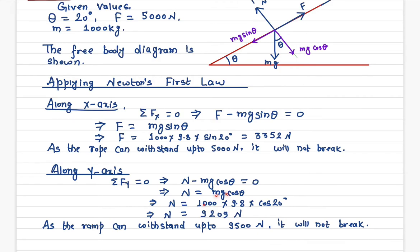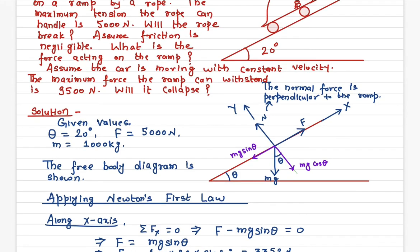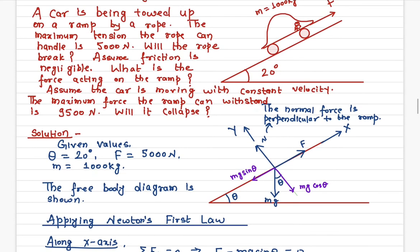And now N will be equal to mg cosine theta. The mass is given, G is given, cosine theta. If we solve, what I get is 9,209 newton force. And this ramp can handle 9,500 newton. So again, it won't collapse.